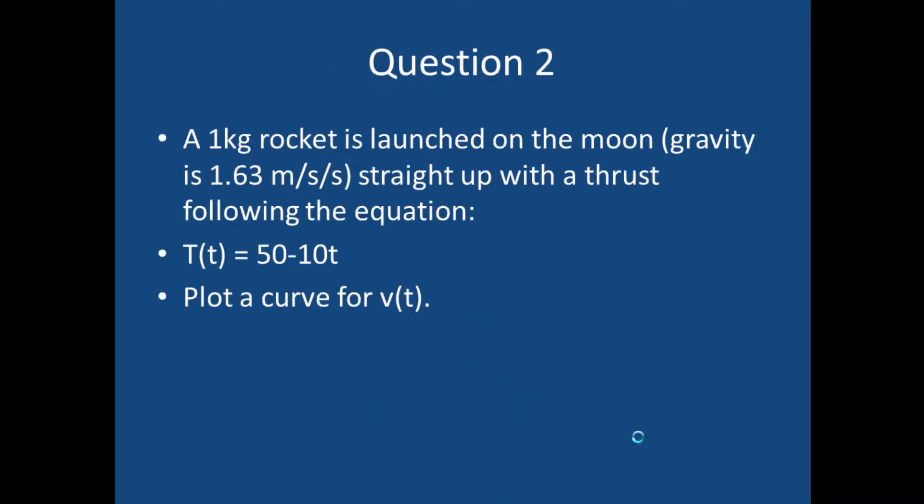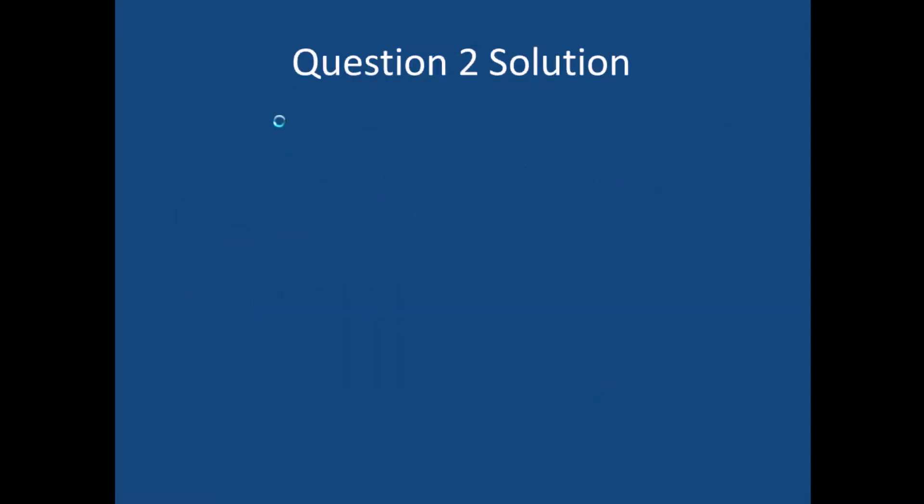Question number two: a one kilogram rocket is launched on the moon, and our gravitational acceleration is 1.63 meters per second squared, straight up with a thrust following this equation t of t equals 50 minus 10 t. And it wants us to plot a curve for v of t for the velocity. Now this is going to be kind of interesting with this pen that I'm writing with on the screen but we'll try it. So why don't you go ahead and try it on your own first. Pause and we're back.